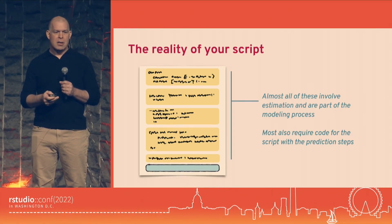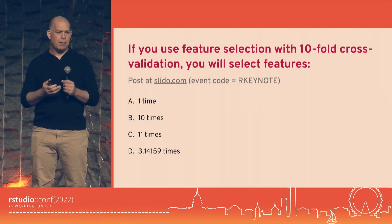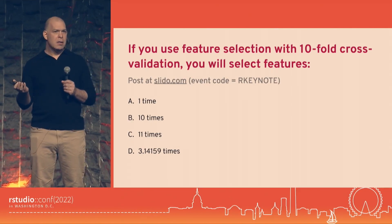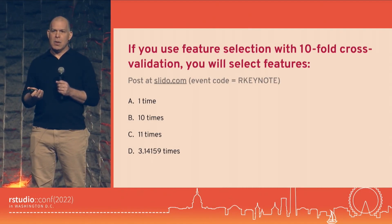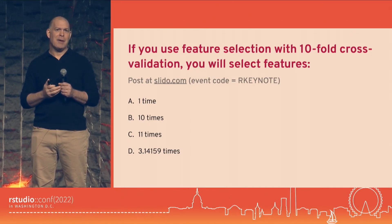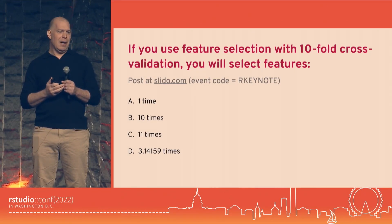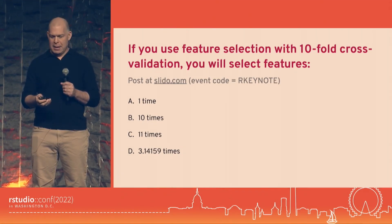So let's say in our Spotify data we're going to do a ten-fold cross-validation to validate our model, and we're going to use feature selection. Actually, how many times are we going to run that feature selection? Once? Ten times? Eleven times? Or some fractional amount because it was taking so long you hit escape? It's not a trick question, but more than one of these could be true.